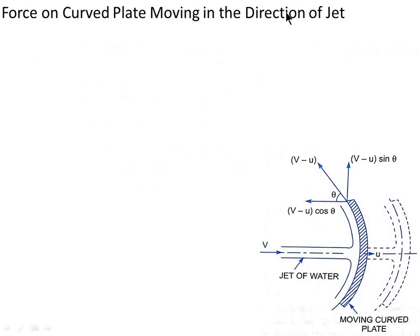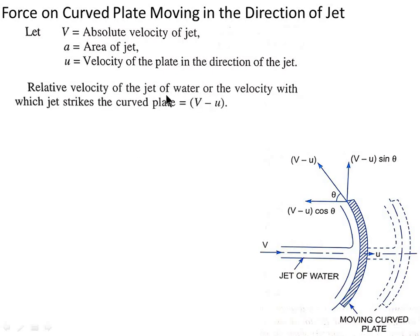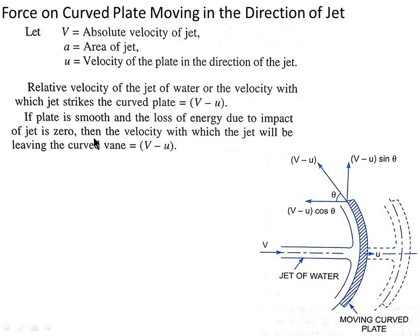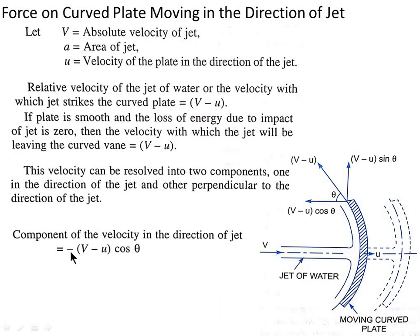Next is force on a curved plate moving in the direction of jet. The jet strikes the curved plate at the center and deflects by an angle of 180 minus theta. Let V be the absolute velocity of jet, A the area of jet, and U the velocity of plate. The relative velocity with which the jet strikes the curved plate is (V minus U). If the plate is smooth and loss of energy due to impact is zero, the jet leaves with velocity (V minus U), which resolves into: component in direction of jet equals minus (V minus U) cos theta, and component perpendicular to direction of jet equals (V minus U) sin theta.